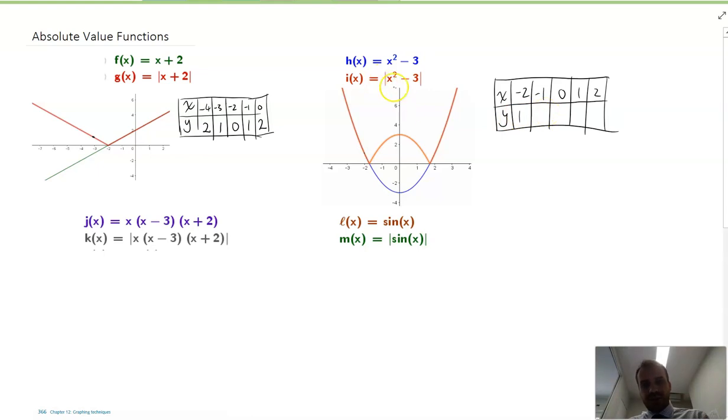Now, at negative 1, negative 1 squared is 1. Minus 3 is negative 2. But, the absolute value of negative 2 is 2. So, we get this value here.